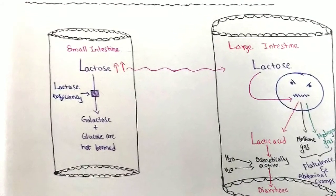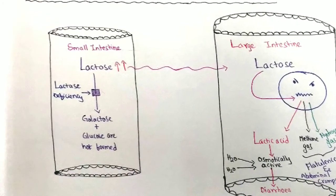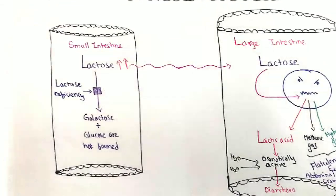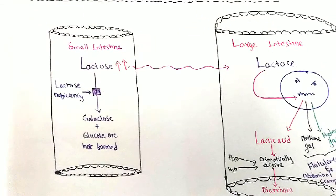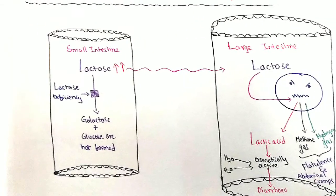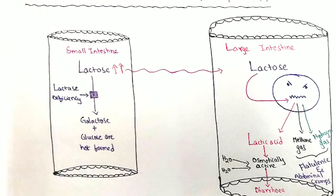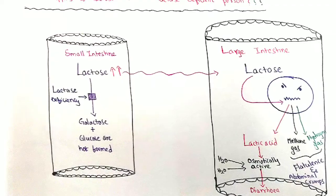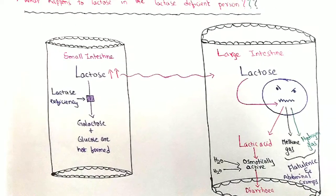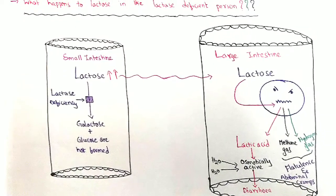One of these products is the organic acid lactic acid, which is osmotically active — meaning it draws water into the intestine, thereby leading to diarrhea.